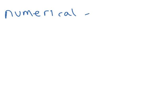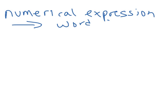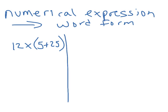The second concept taught in Lesson 3 is taking the numerical expression and converting it back to word form. We'll go to problem set question number two, and it gives us an expression of 12 times (5 + 25). The word form would be: twelve times the sum of 5 and 25.